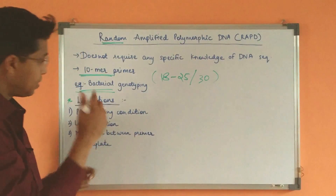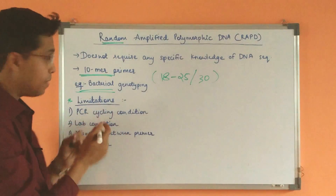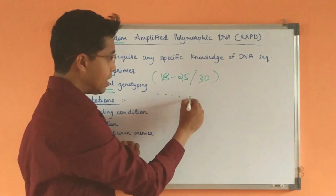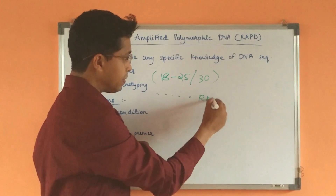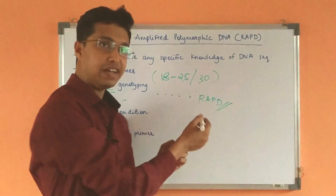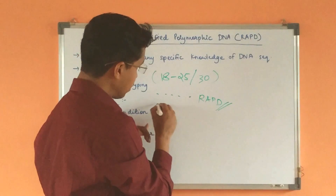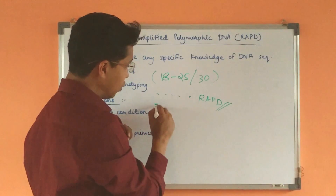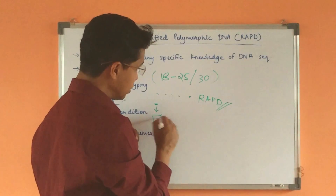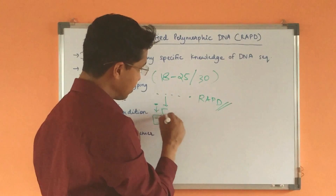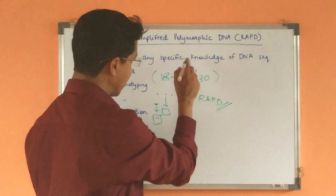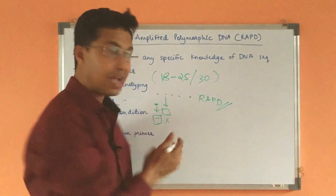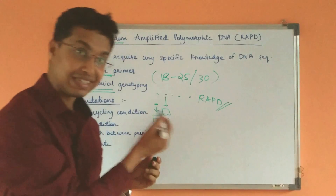As an example, consider bacterial genotyping. You take a species from various countries and amplify them using RAPD primers. If a complementary region is present in that species' DNA, it will get amplified and give a pattern on a gel. If that region is not present — meaning no complementarity to the specific RAPD primers — it will not amplify. This is how RAPD can be used for genotyping.